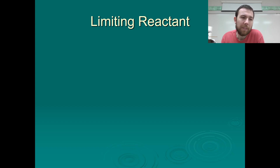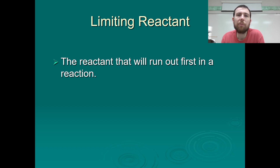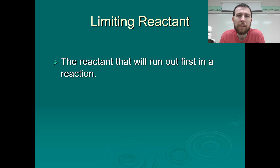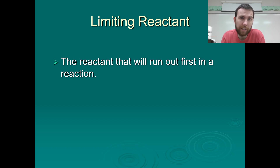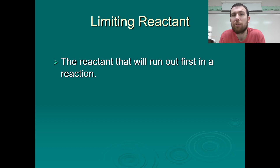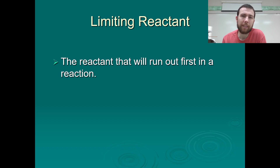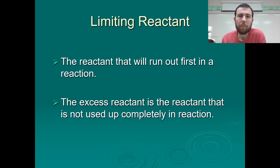The limiting reactant is the reactant we're going to run out of first in our given chemical reaction. Think about it like making a peanut butter sandwich — you need two slices of bread and some peanut butter. If you only have one slice of bread, you can't make a full sandwich. The bread is what you consume first. The same is true in chemical reactions: one reactant is used up first.